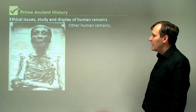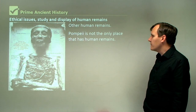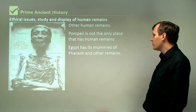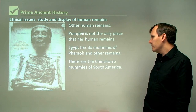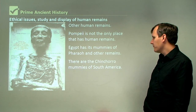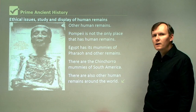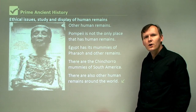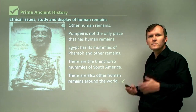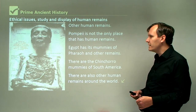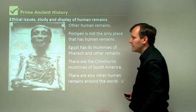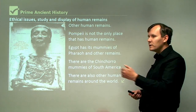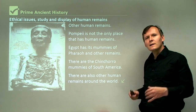Pompeii is not the only place that has human remains. Egypt has its mummies of pharaohs and other remains, and then there are the Chinchorro mummies of South America. There are also other human remains around the world. In this picture here we see the ancient Egyptian pharaoh Tutankhamun. He's one of the most famous pharaohs because his tomb was discovered in 1922. We can see his face and his body, and there are other pharaohs on display in the Cairo Museum.